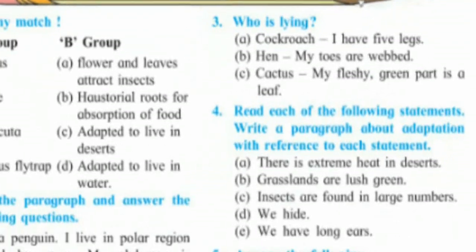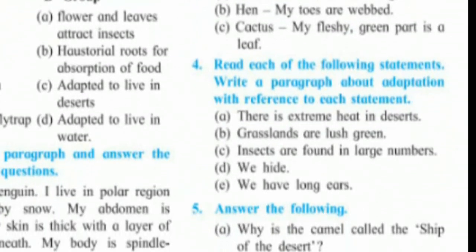Question number four: read each of the following statements and write a paragraph about adaptation with reference to each statement. Statement one: 'There is extreme heat in the desert.' According to this, you have to write a paragraph about how the body structure and life processes of plants and animals are adapted to extreme desert heat. For example, refer to camel, rat, and snake, and also plants like cactus.